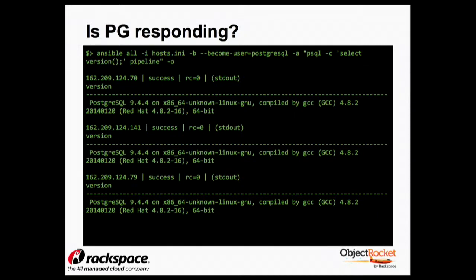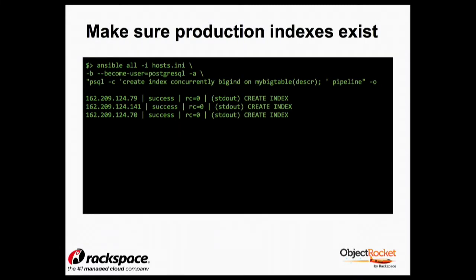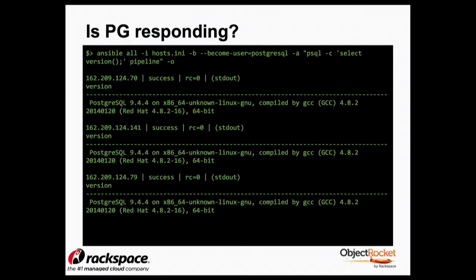In this case, I'm becoming the postgres user and doing select version. Come back and tell me what the version is on all these servers — I want to make sure I've got the same version across all my hosts. And by the way, that they're up. If one wasn't up, it would say success with some RC code, and you'd see that 10% of your servers are down.